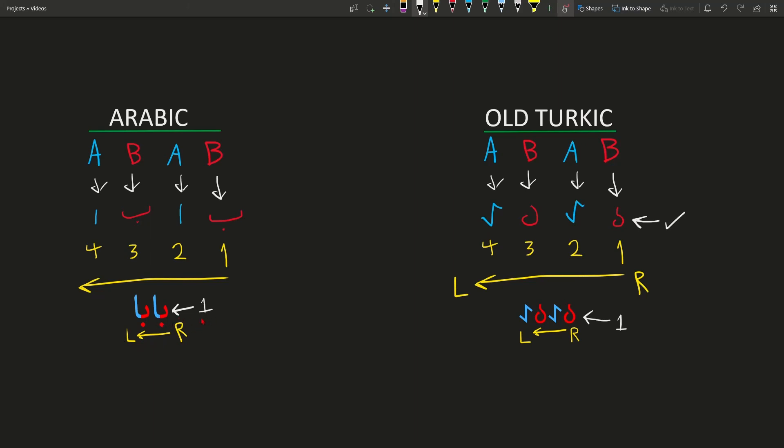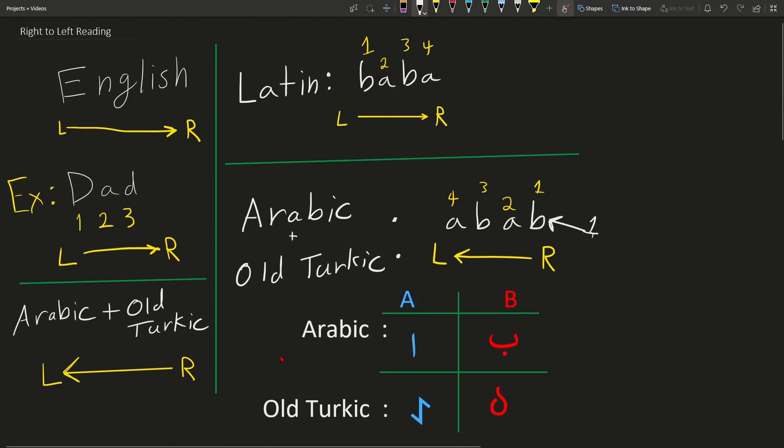This B is where your eyes should be drawn to first. Do not look over here. So, this is the principle of right-to-left reading summarized. I hope this has served you well. If you have any questions, comments, or concerns, please leave them in the comments section. Otherwise, I'll see you next time. Thank you.